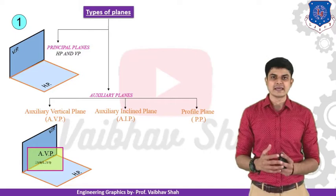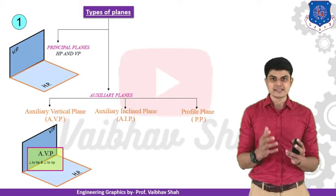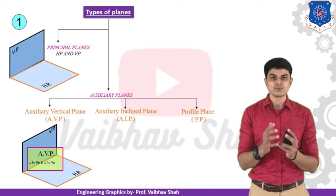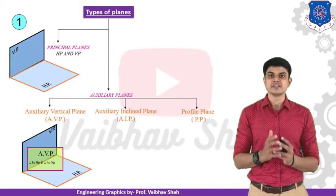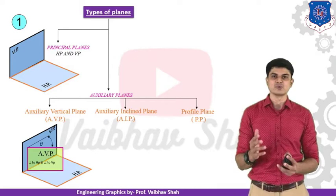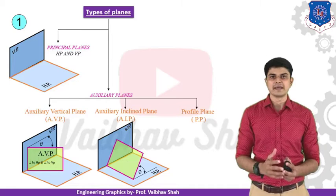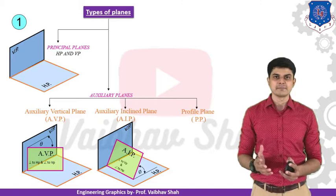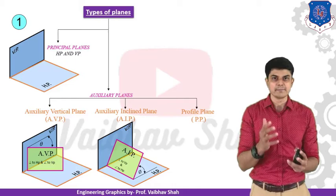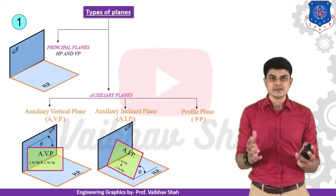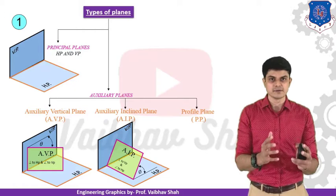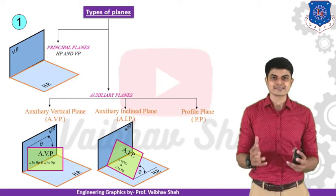Now let us take another case — the auxiliary inclined plane (AIP). In the previous case, the plane made an angle with the vertical plane. In this case, the plane makes an angle with the horizontal plane. As you can see, this plane is perpendicular to the vertical plane but making a certain angle with the horizontal plane. This kind of plane is the AIP or auxiliary inclined plane. Remember, this is different from an auxiliary horizontal plane.